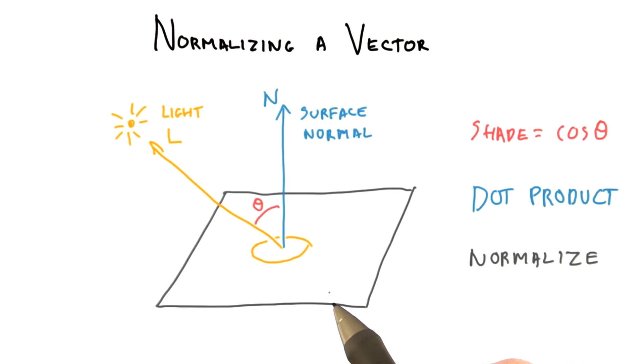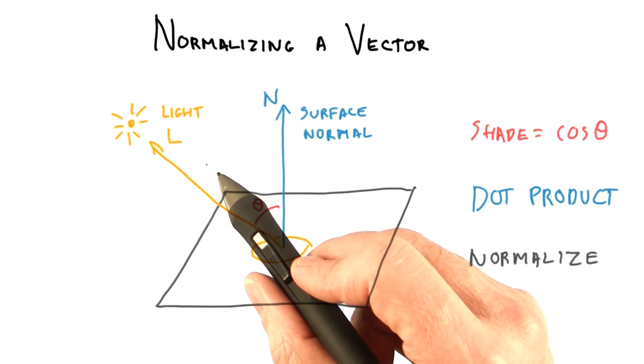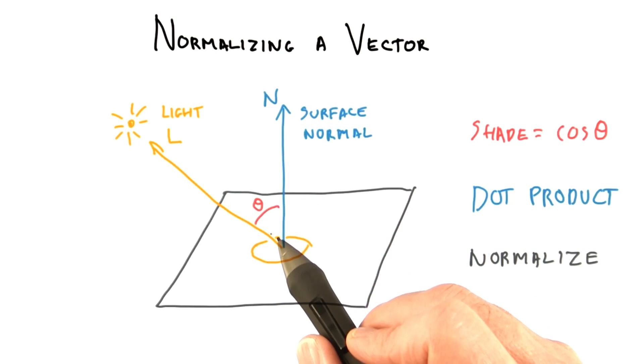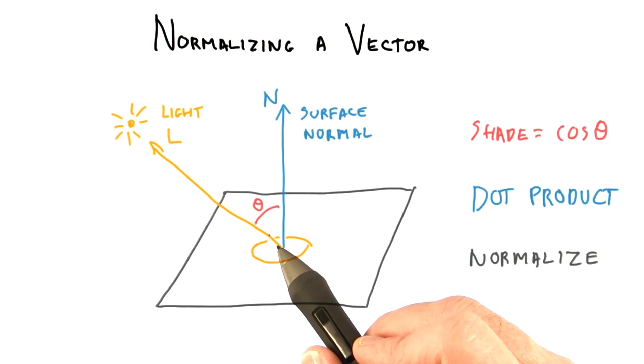First, we must normalize the surface normal and the vector to the light. Normalizing means rescaling a vector so that it has a length of 1. Normalized vectors are the norm in reflection models. As we'll see, the dot product of two normalized vectors gives a value between negative 1 and 1, which will prove useful in computing the effect of lighting.